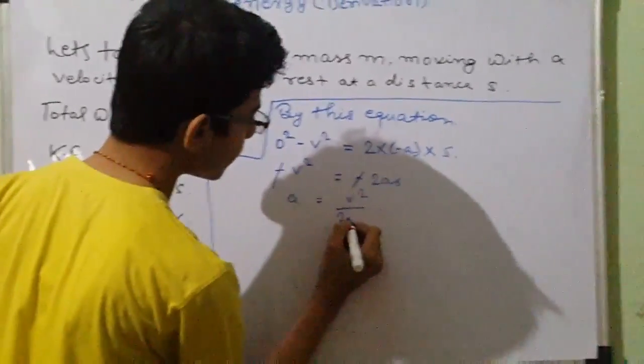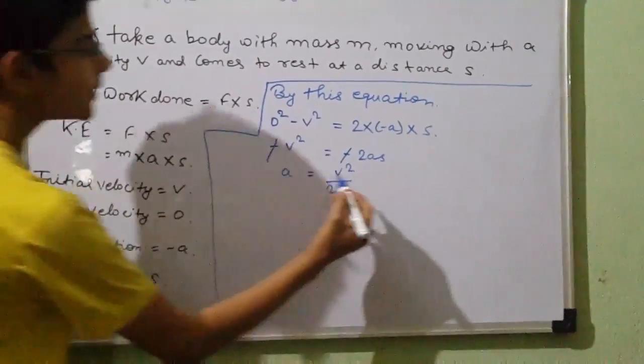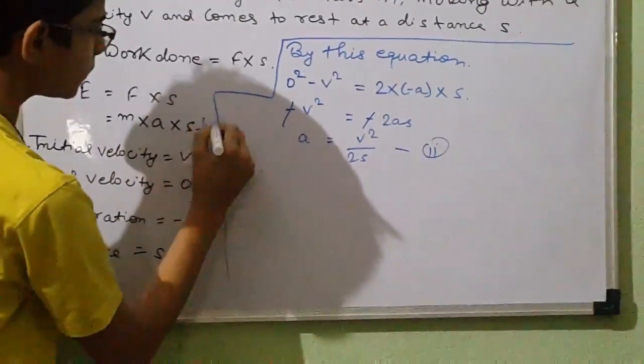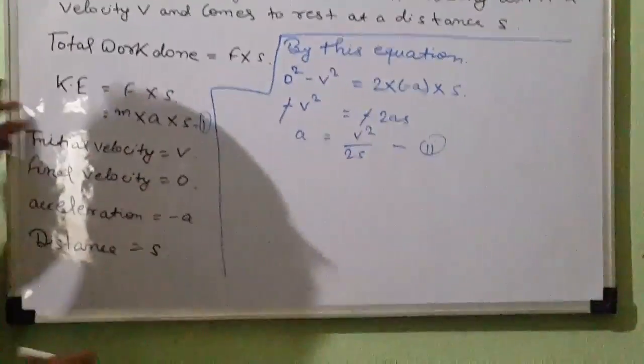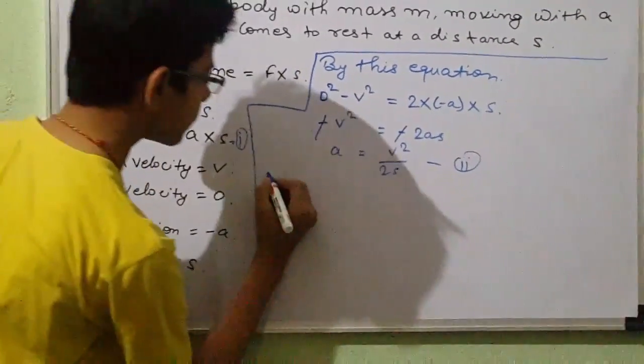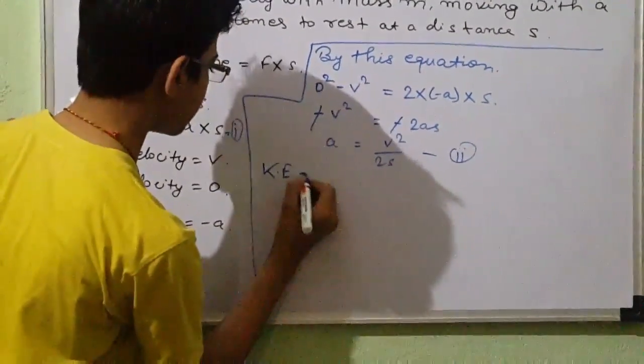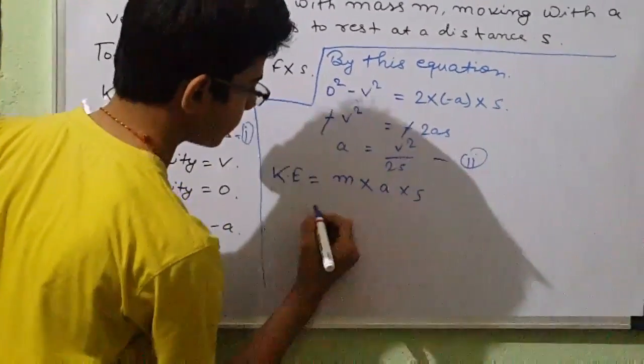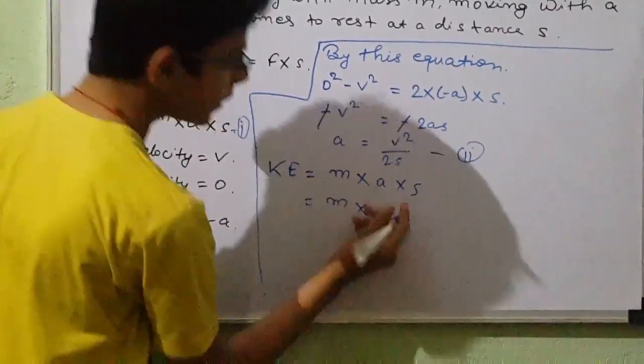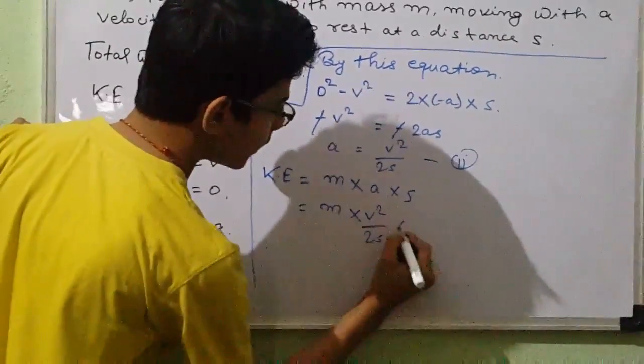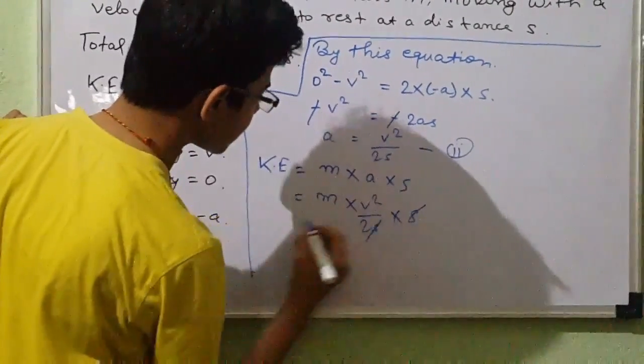Divide by 2s, take this as equation 2. That is, KE equals m into a into s. Put the value of a here: v squared by 2s into s. S cancels.